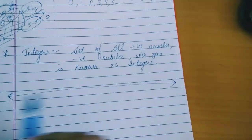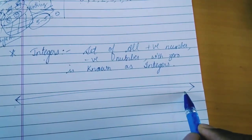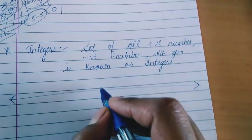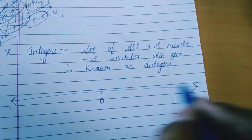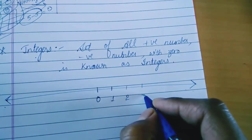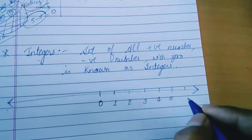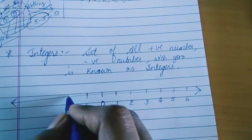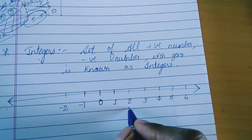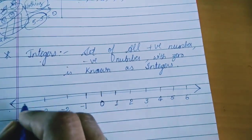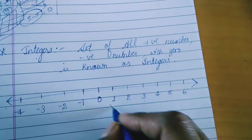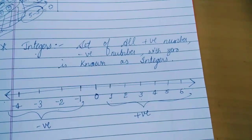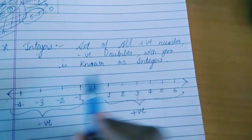The number line of integers has two sides, both having arrows, meaning it can be extended in both directions. In the middle of the number line we have zero. On the right hand side we have all the positive integers: 1, 2, 3, 4, 5, 6, and so on. On the opposite side we have minus 1 — the opposite of 1 — then minus 2, minus 3, and so on. These are the positive integers and these are the negative integers. The set of all positive and negative numbers with zero is known as integers.